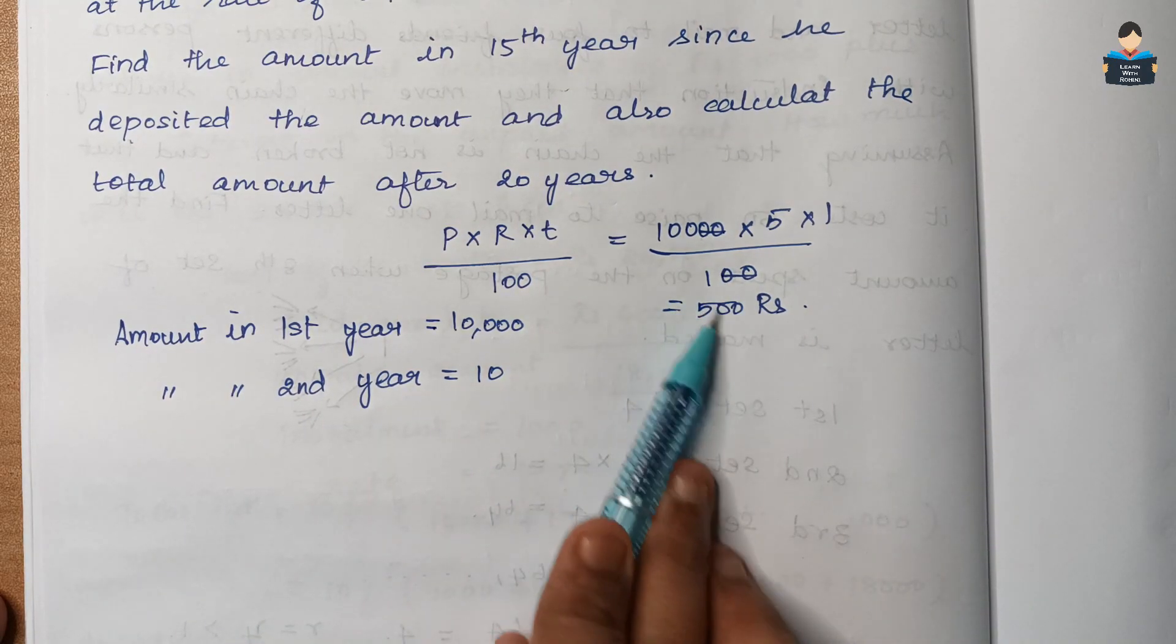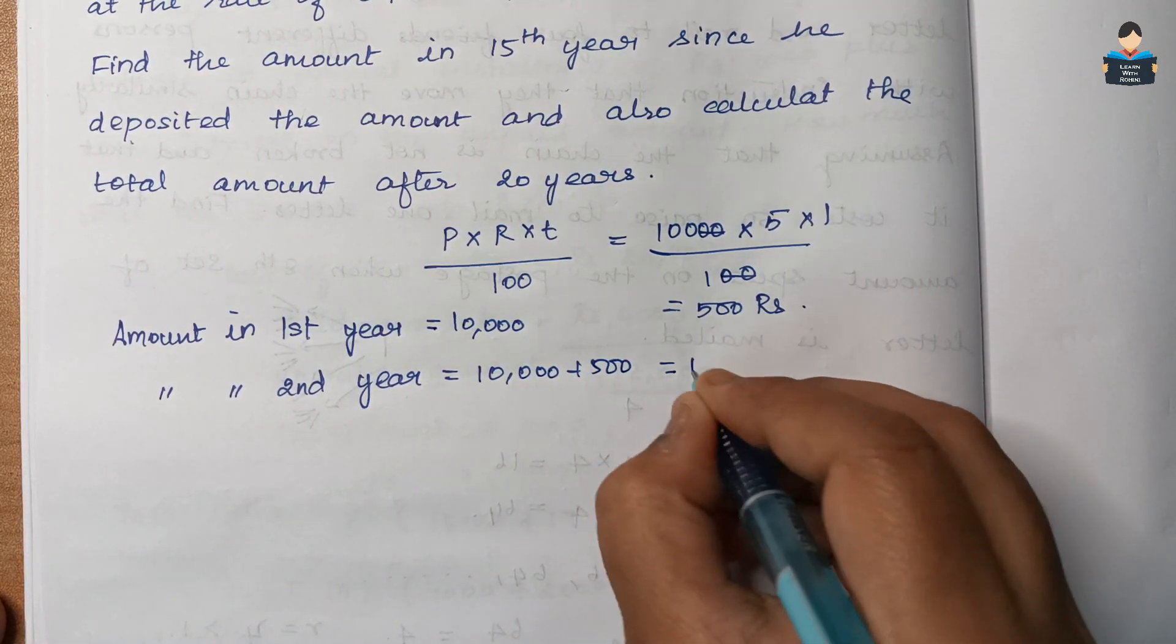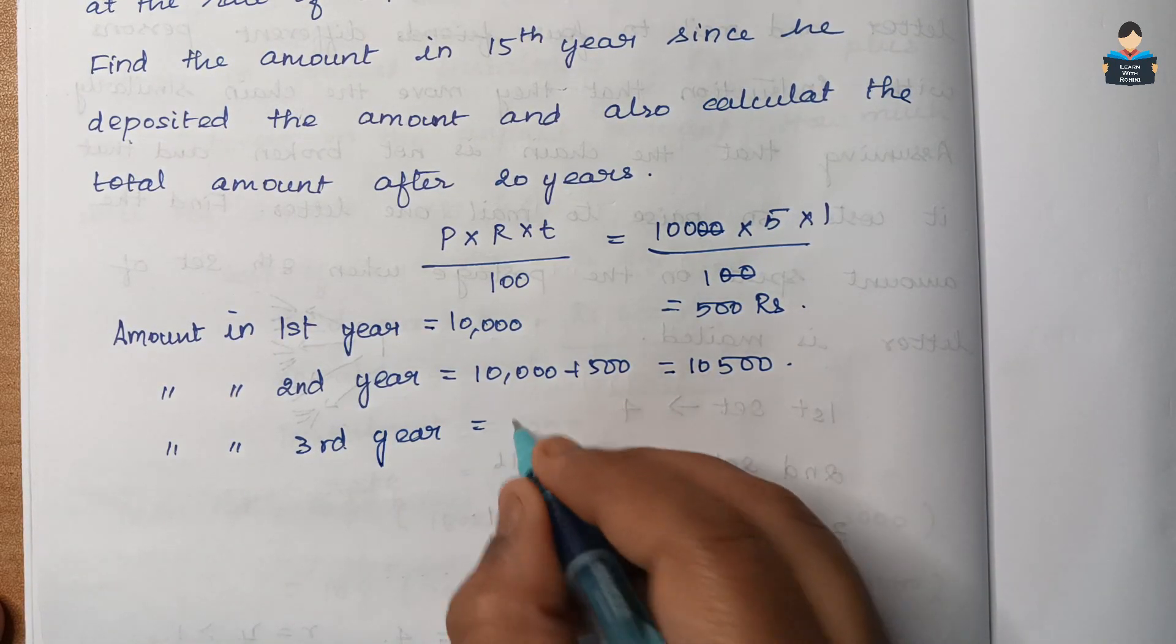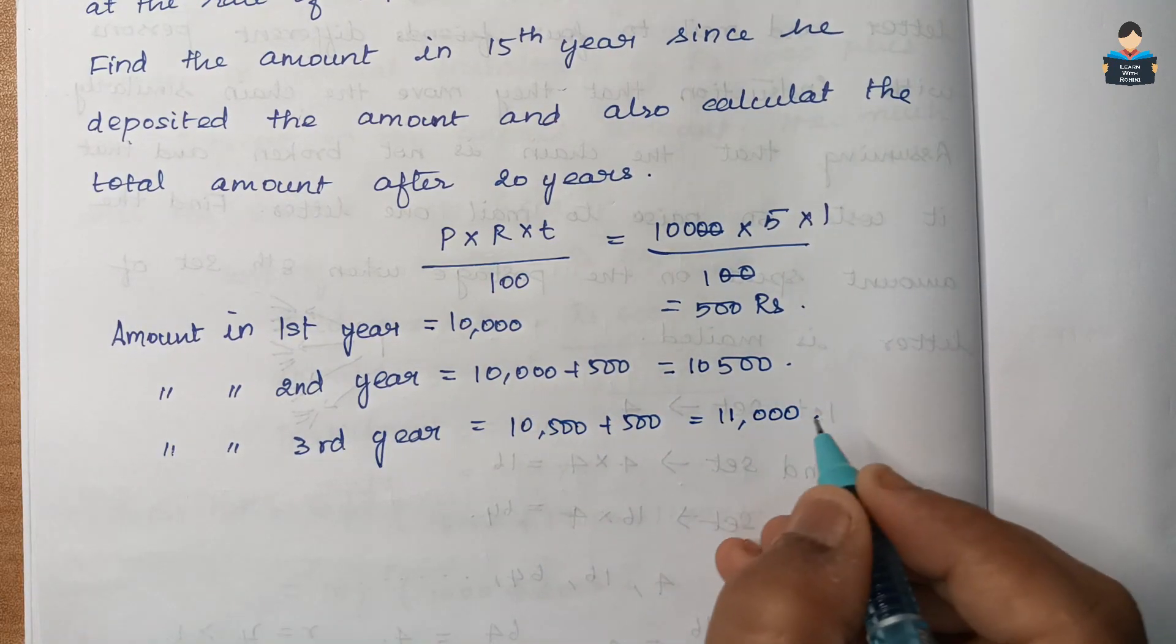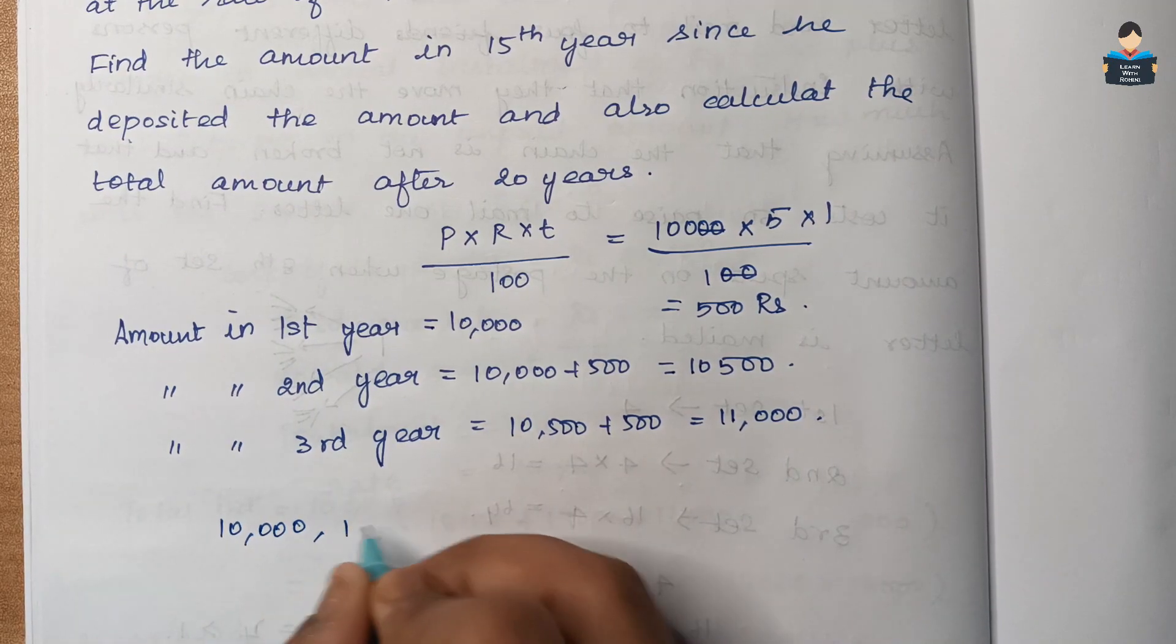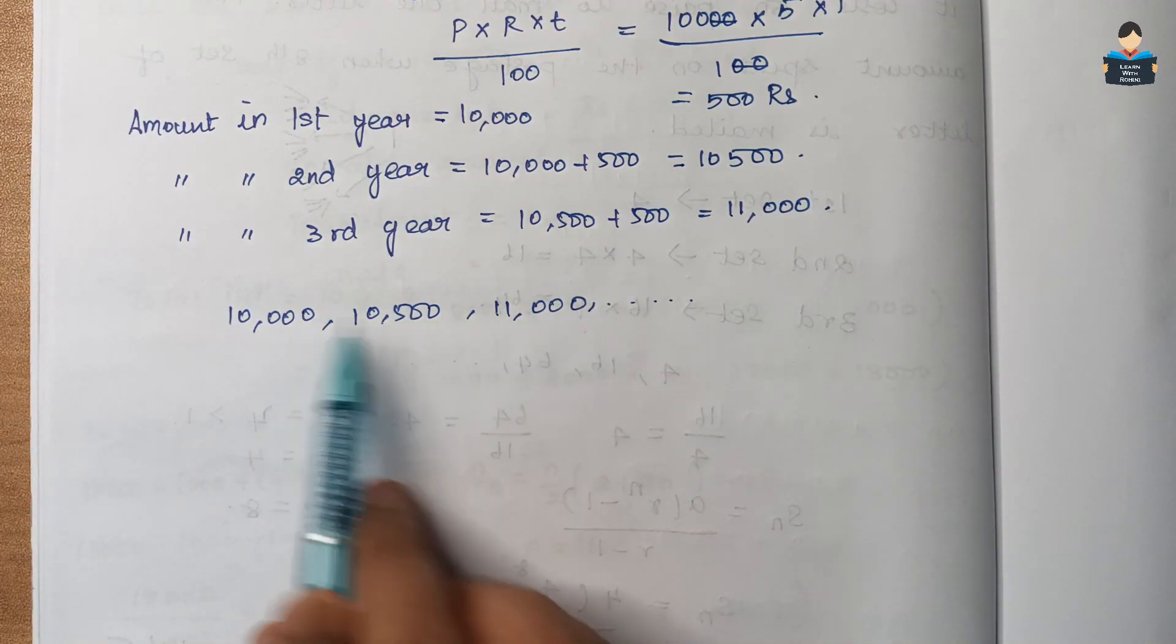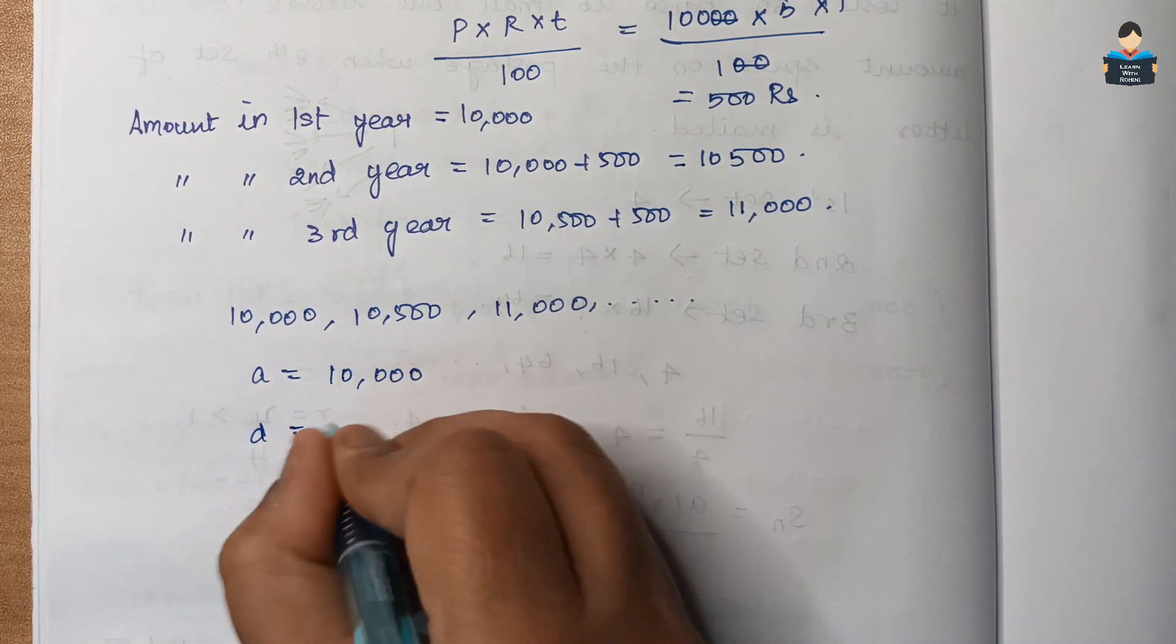Amount in the second year is 10,500 plus 500 equals 11,000. The series is 10,500, 11,000. This is an AP with A equal to 10,000 as first term and D value is 500.